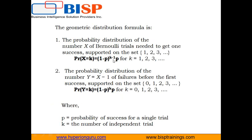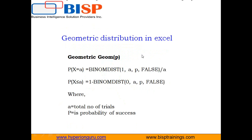In Excel, the geometric distribution is handled as a special case of the negative binomial distribution. The BINOM.DIST function is used where the number of successes is 1, and when the number of successes is 0, an alternative form of the formula applies.